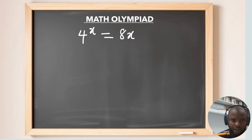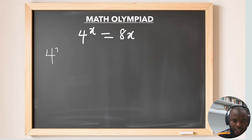This is an Olympiad-style mathematics problem. Let's rewrite the given equation: we have 4 to the power of x equals 8x.